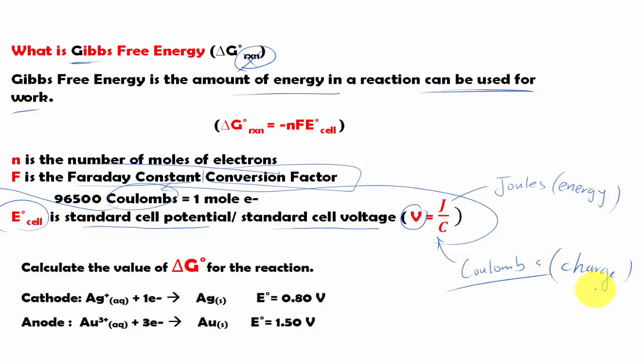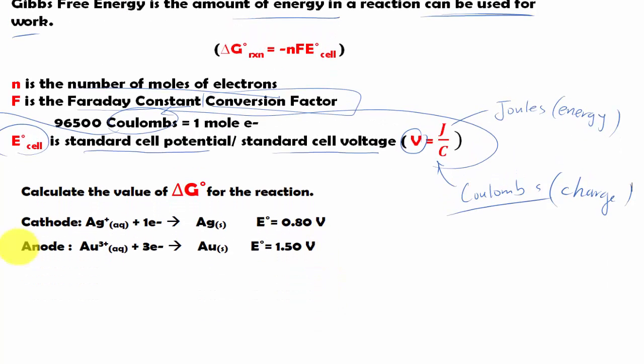So keep that in mind, because eventually you need to know what coulomb is used for, and what joules is used for. So let's do an example problem. And how can we use the half cells to solve for ΔG?